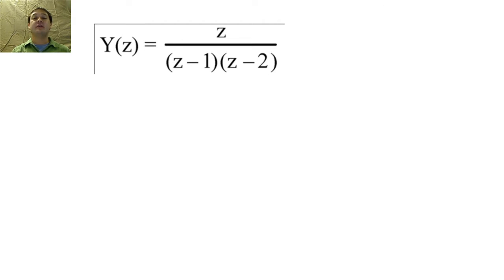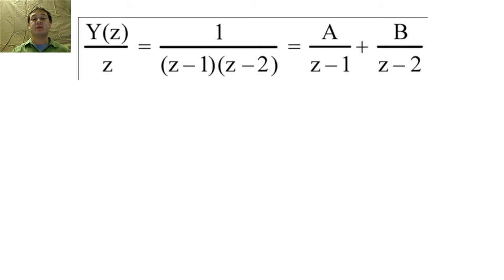If we have this Y of Z, we can find the inverse Z transform by using partial fraction expansion, just like the one-sided Z transform. And then we would calculate the values of A and B using the methods that we have discussed before.